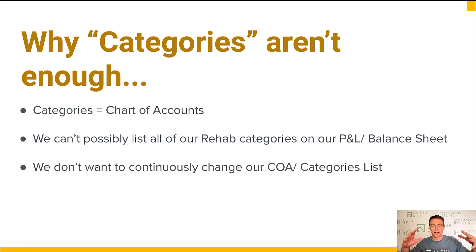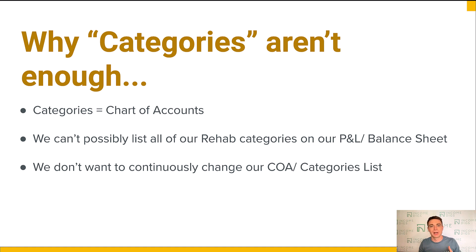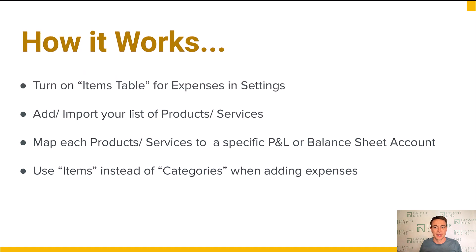So why aren't categories enough? In QuickBooks Online, categories are your chart of accounts. I don't want you to list a giant list of categories — rough electric, final electric, rough plumbing, rough HVAC, cabinetry — as chart of accounts line items. Your profit and loss needs to be readable in one to two pages. We also don't want to continuously update our chart of accounts. We want consistency there, so we don't want to go back and change it every time we add or subtract services.